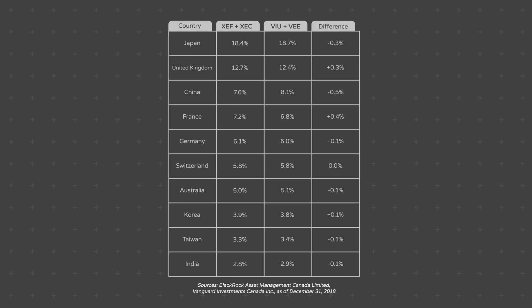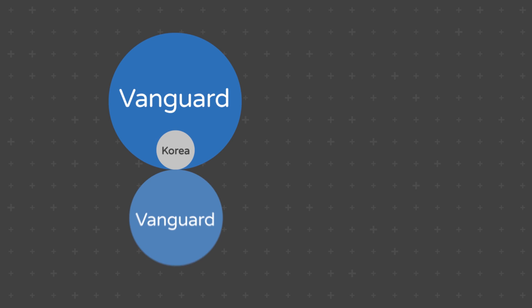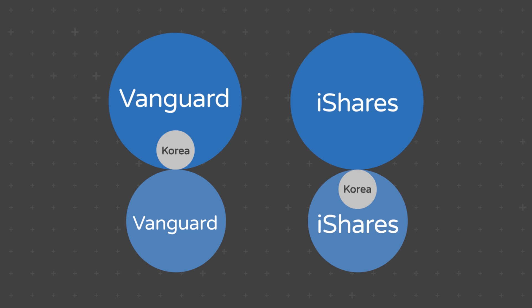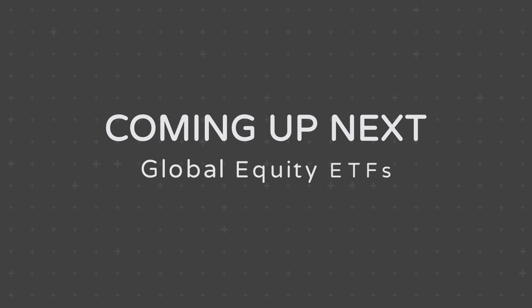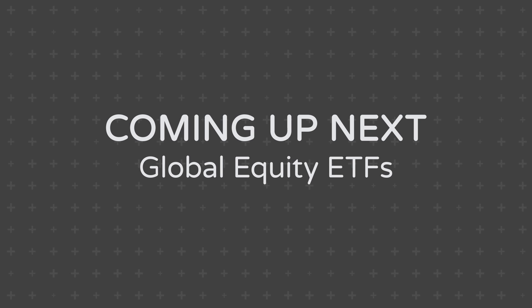So there you have it. Depending on which ETF company you choose, you can use a market cap weighting approach to achieve very similar allocations to international and emerging markets. You'll find only modest differences between the underlying country allocations, with Korea representing a nearly identical allocation in each. Also, by pairing either Vanguard with Vanguard or iShares with iShares, you'll be just right on your Korean stock exposure — neither double dipping nor eliminating the allocation entirely due to differing definitions for the same stocks. Coming up next, we'll pop the hoods on a number of global equity ETFs that use a similar global market cap weighting scheme for their underlying country allocations.